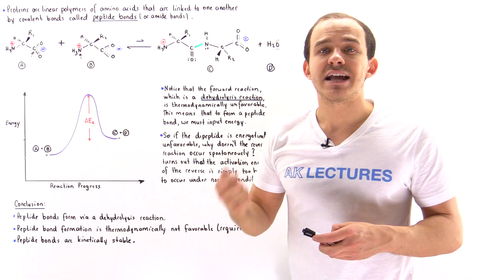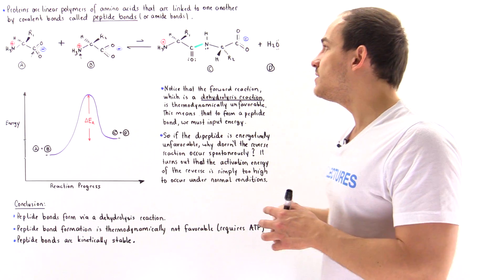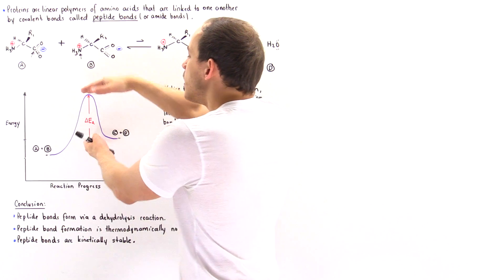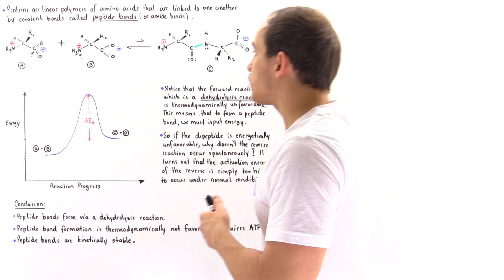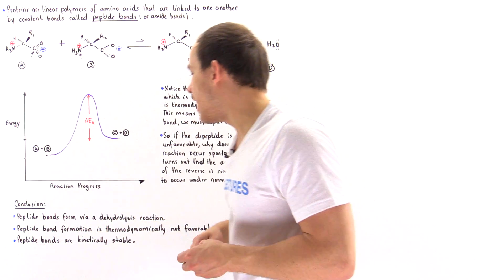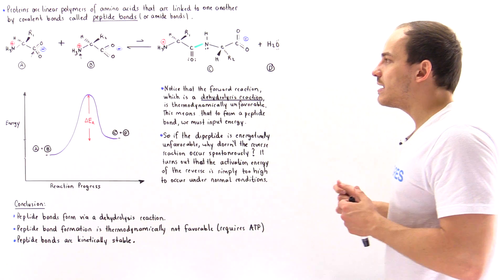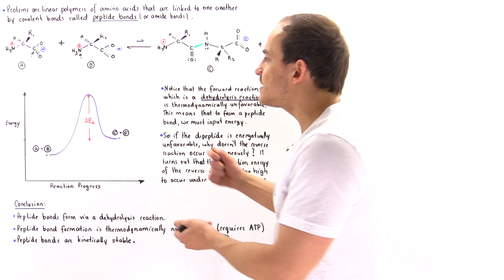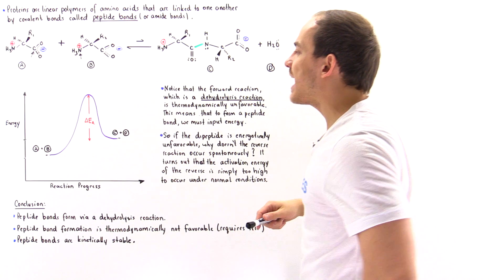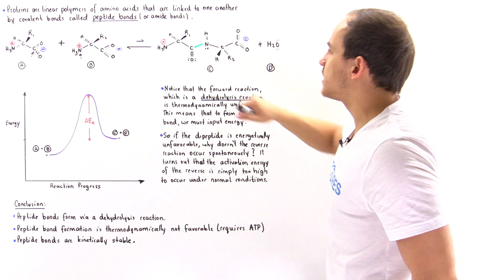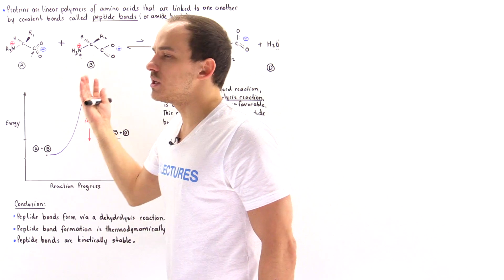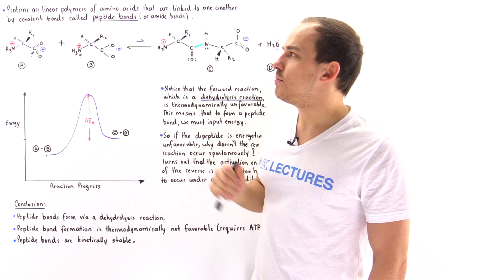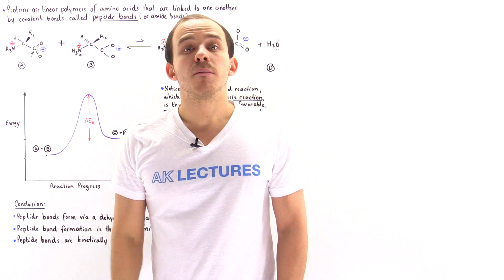Fact 3: the reason that proteins and peptides inside our cells don't spontaneously break apart is because the reverse reaction is kinetically unfavorable — there is simply too much energy in the activation barrier to go from products back to reactants. So peptide bonds are kinetically stable. We would have to increase the temperature significantly or use an enzyme that decreases the activation energy to actually break the peptide bond and return to the individual constituent amino acids. These are the bonds that hold our amino acids together inside protein molecules.